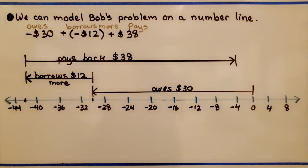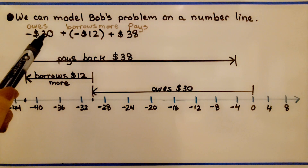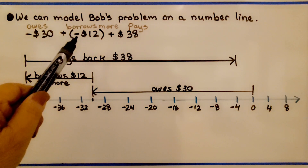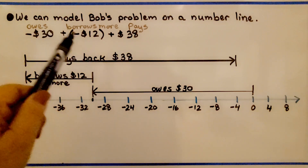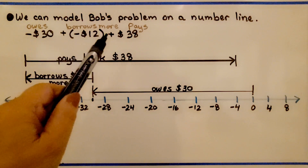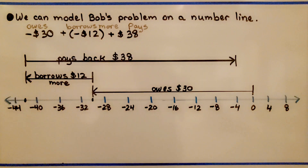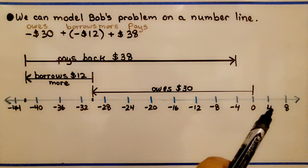We can model Bob's problem on a number line. He owes Sam $30, so we have negative 30. He borrows more — that's negative 12 — and we can put his debts together. Then we're going to add a positive 38 when he pays them back. The number line is in increments of 4.